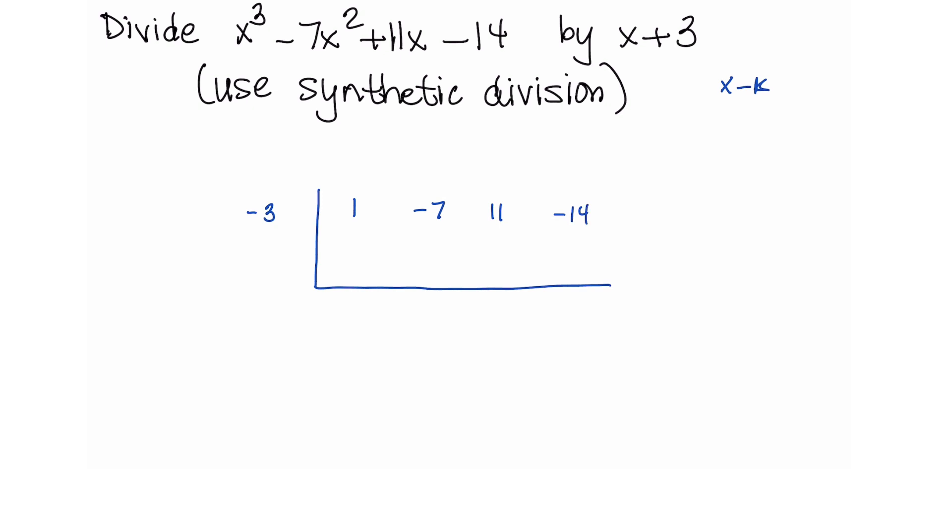And we automatically bring the first coefficient down. Now I want to talk about that for a moment. So if you're dividing x plus 3 into x cubed minus 7x squared plus 11x minus 14, the first thing you're going to put in the quotient is an x squared, because x squared times x is x to the third.